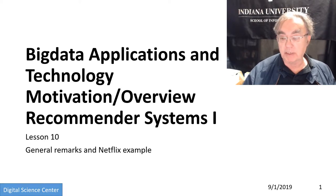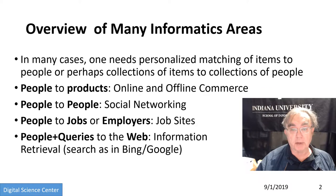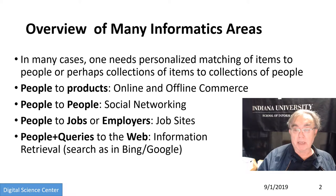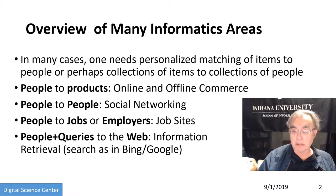We're doing the course motivation, Lesson 10, Unit 2, Section 1. If we look at many informatics areas, one needs some sort of matching of things. If we're doing purchasing, we want to take people and match items they can purchase. We have various possibilities: people to products — that's online and offline commerce; people to people — that's social networking; people to jobs — that's things like Monster or job sites, matching people to employers. And then people plus their queries matched to the Internet — that's called search.